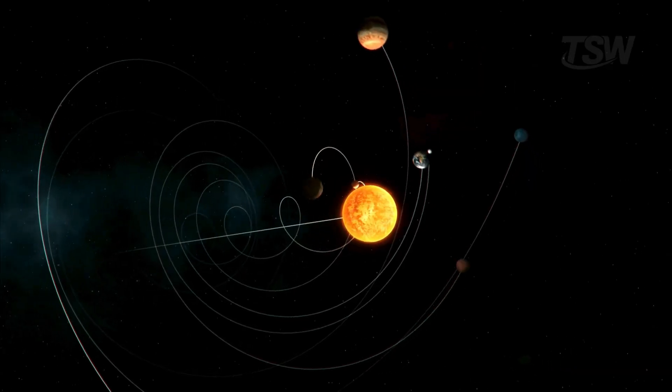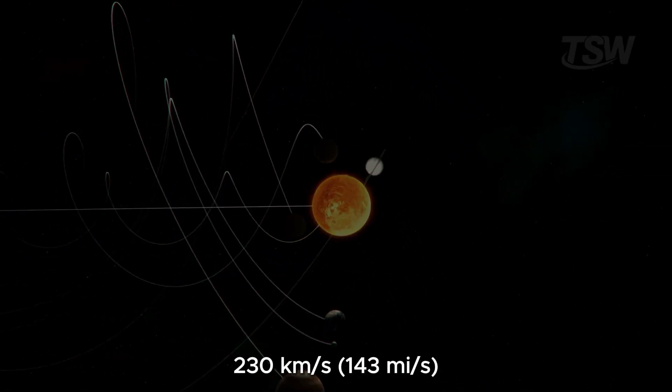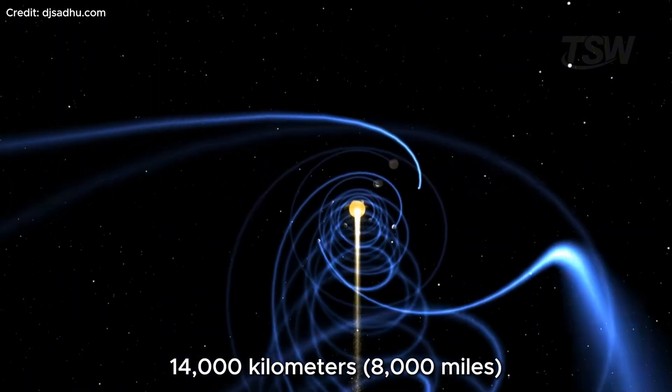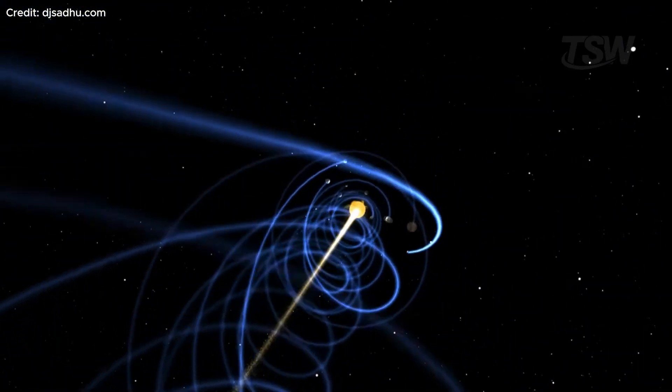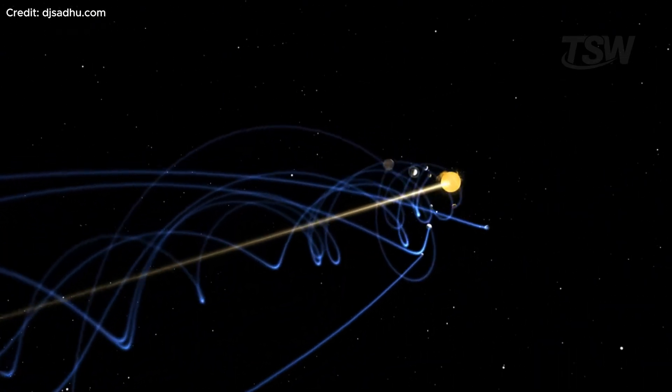Every second, Earth travels about 230 kilometers through galactic space. In a minute, we've already gone nearly 14,000 kilometers, and in an hour, more than 800,000. That means while you watch this video, the entire solar system has surged tens of thousands of kilometers toward the unknown.